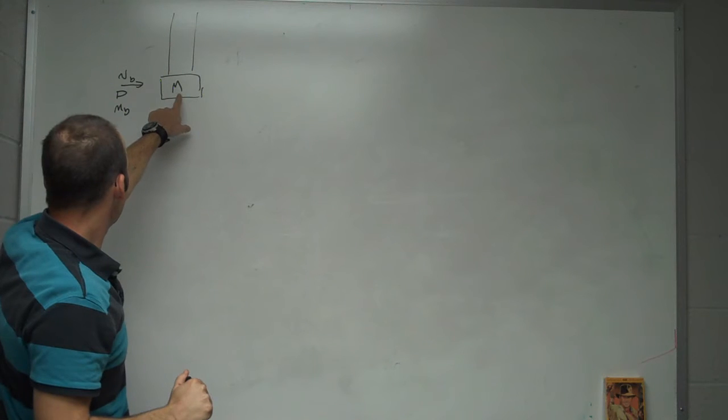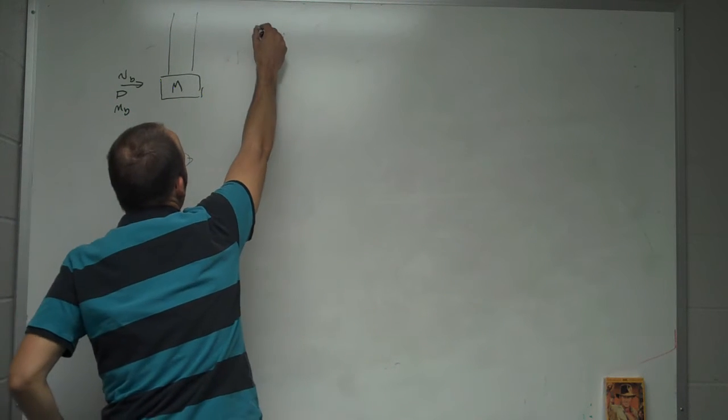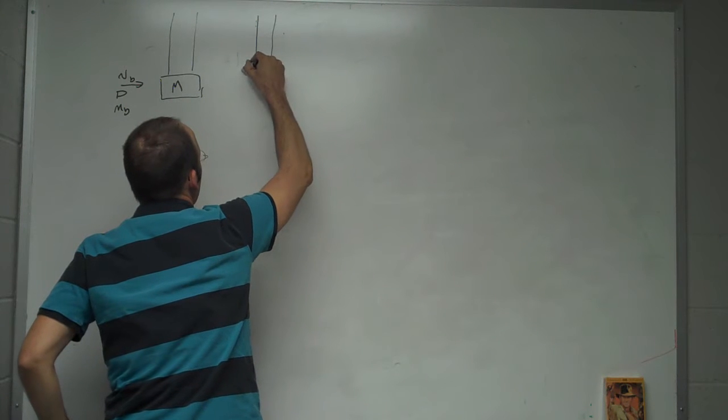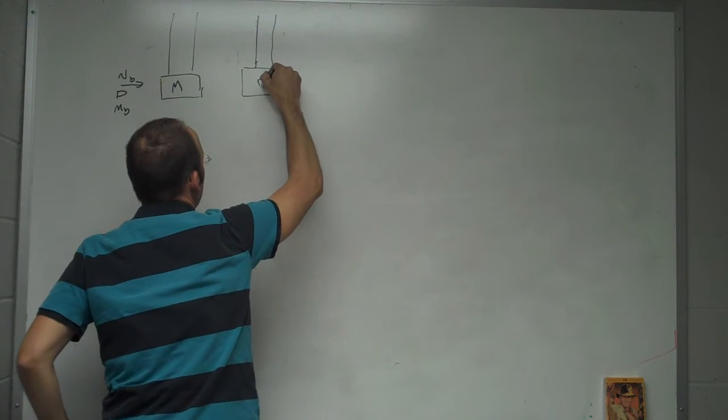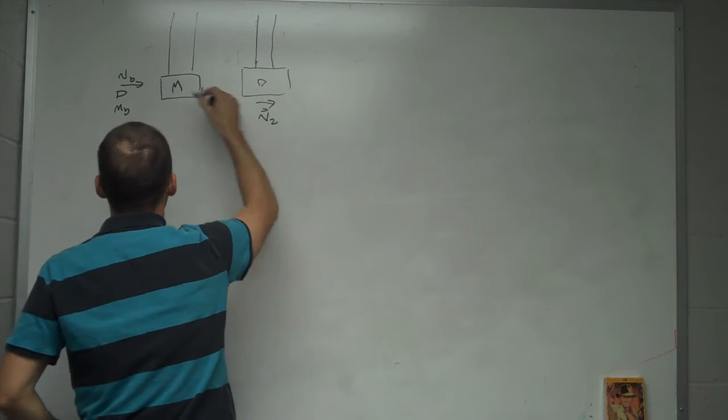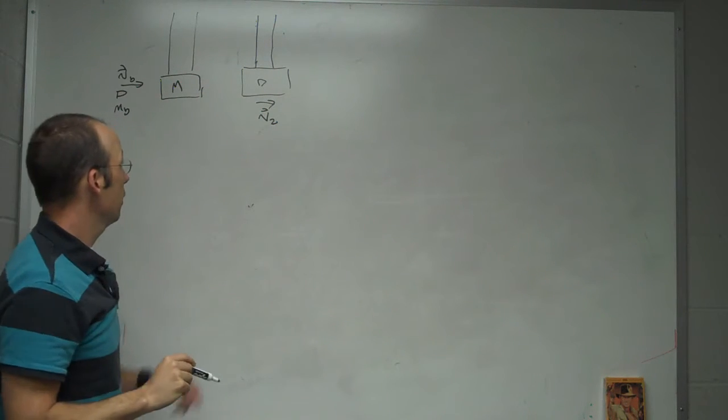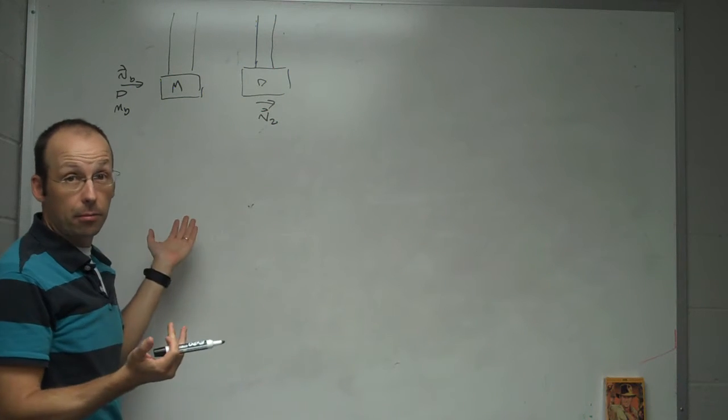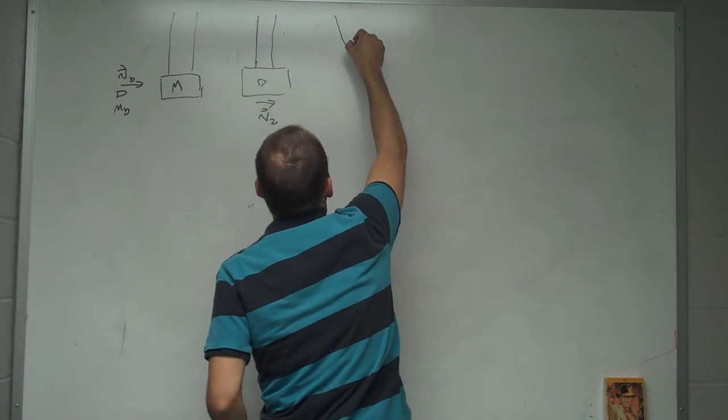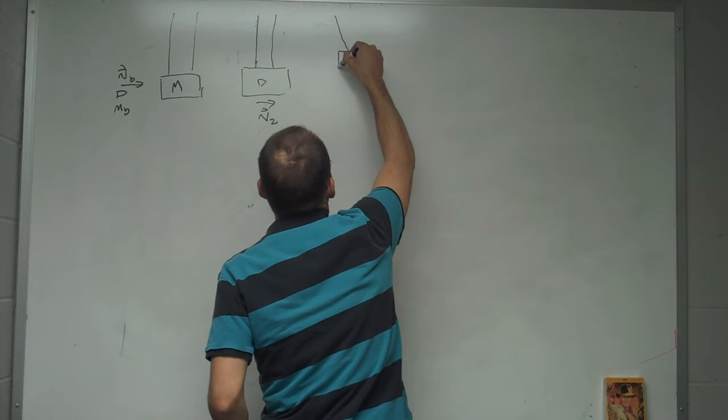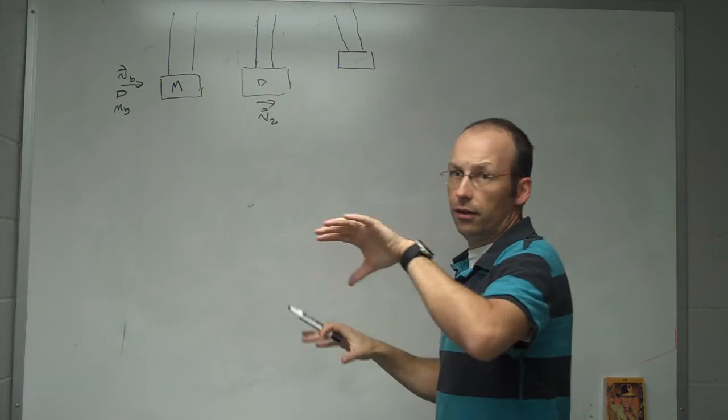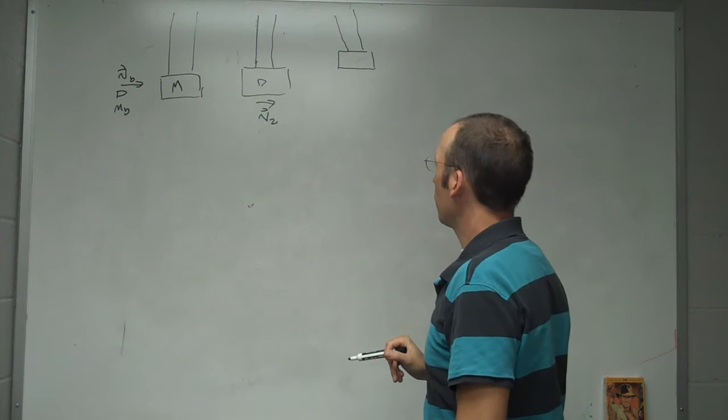After it collides, then we have next step is the bullet's embedded in there. And this we'll call V2. That's in the X direction. And then now it's a pendulum and it's moving so it swings up. So it goes like this. It's usually on two strings to prevent it from rotating like that.